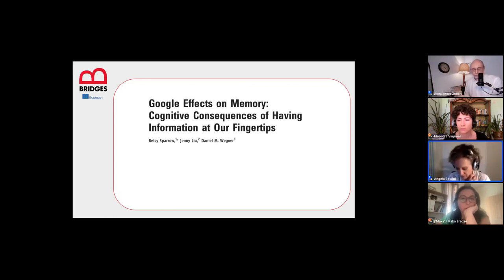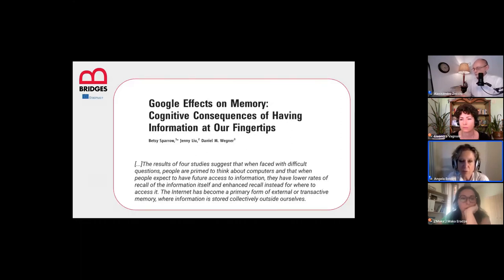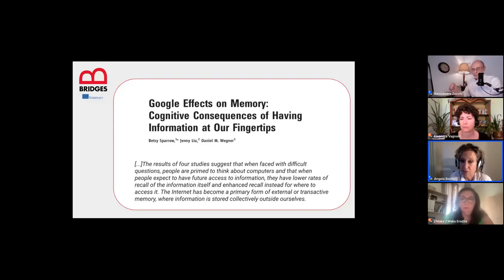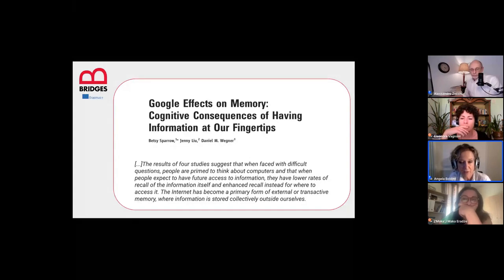Sparrow and colleagues found that when faced with difficult questions, people are primed to think about computers, and when people expect future access to information they have lower rates of recall of the information itself but enhanced recall of where to access it. The internet has become a primary form of external or transactive memory, where information is stored collectively outside ourselves.